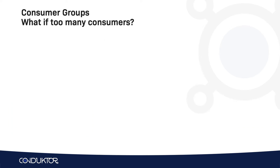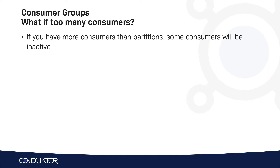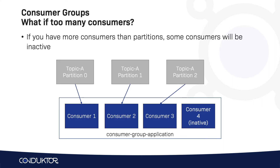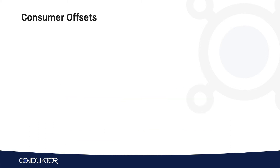What if you have too many consumers in your consumer group? Some consumers will just be inactive. In this example we have four consumers and only three partitions, so the fourth consumer is inactive because there is no partition to read from. But if one of your consumers goes down, the inactive consumer is ready to retrieve the data and start the work again.